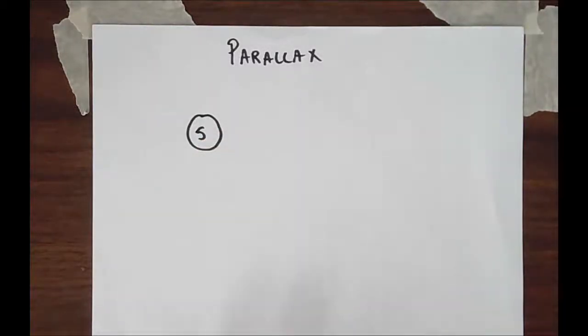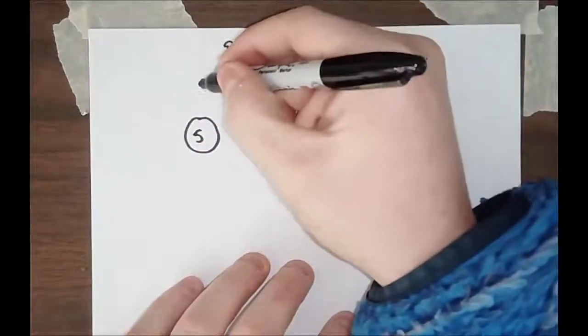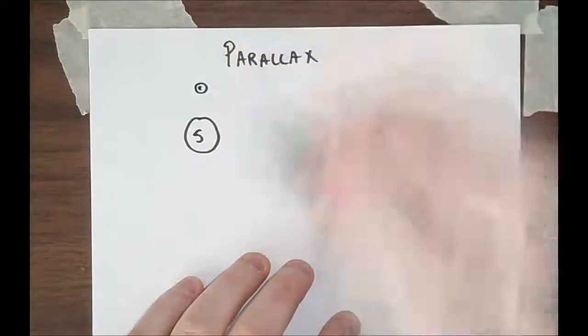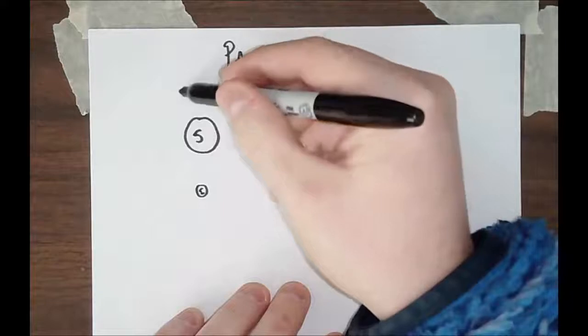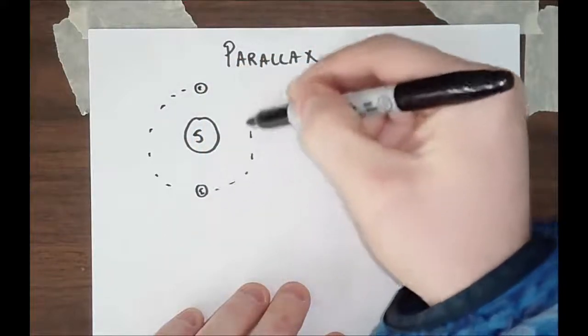Now, how astronomers use it is very simple, just a little bit of trigonometry. Now, Earth orbits the sun. So, I think we all know this, like such.